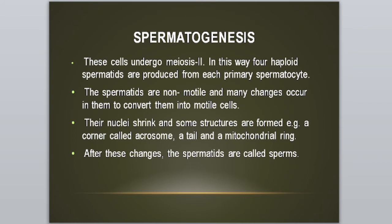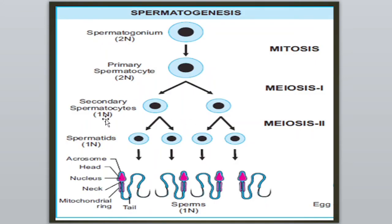پھر یہ two haploid daughter cells یعنی secondary spermatocytes meiosis two سے undergo کریں گے۔ In this way, four haploid spermatids بن جائیں گے ایک primary spermatocyte سے۔ ہر secondary spermatocyte سے دو spermatids بنتے ہیں meiosis two کی stage میں — یعنی complete meiosis perform ہونے پر primary spermatocyte سے چار spermatids بنتے ہیں۔